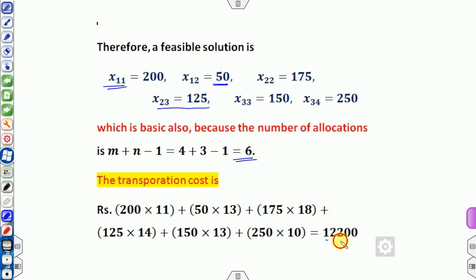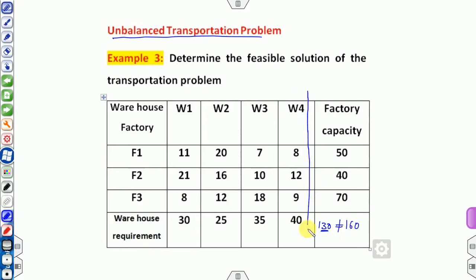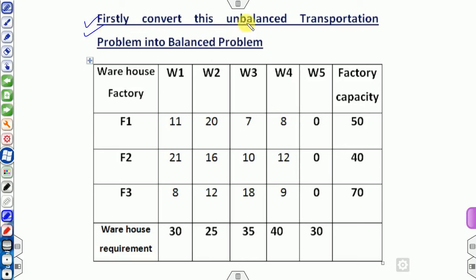Now consider an unbalanced transportation problem: find the feasible solution. The supply sum is 90 plus 90 plus 160 and the demand sum is 55 plus 90 plus 130 — clearly unequal, so this is unbalanced. The demand total is 130 less than supply of 160, so we need to add one extra dummy column whose values will be 30, making both sides equal to 160.